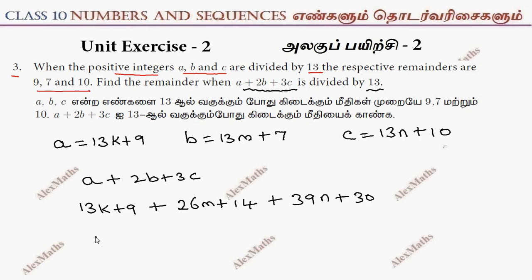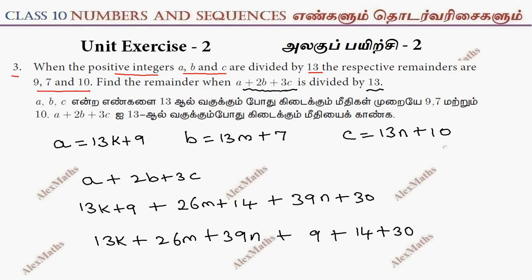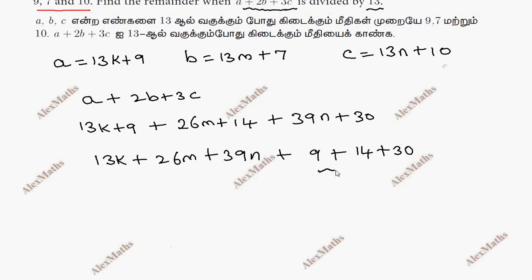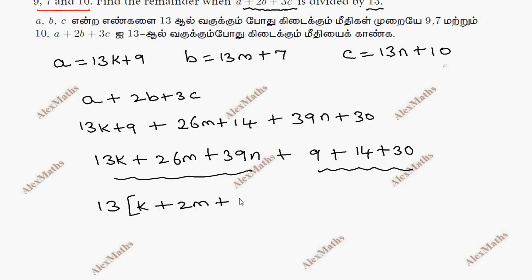Adding these together, the k, m, and n terms separate out. We factor out 13: 13 times the quantity k plus 2m plus 3n. The remaining constants are 9 plus 14 plus 30.